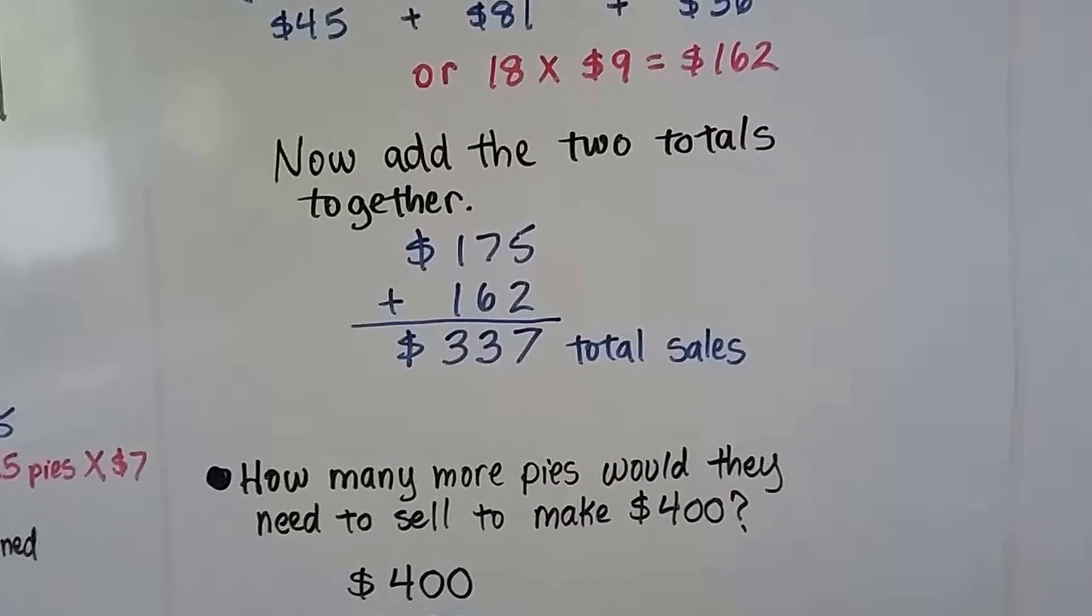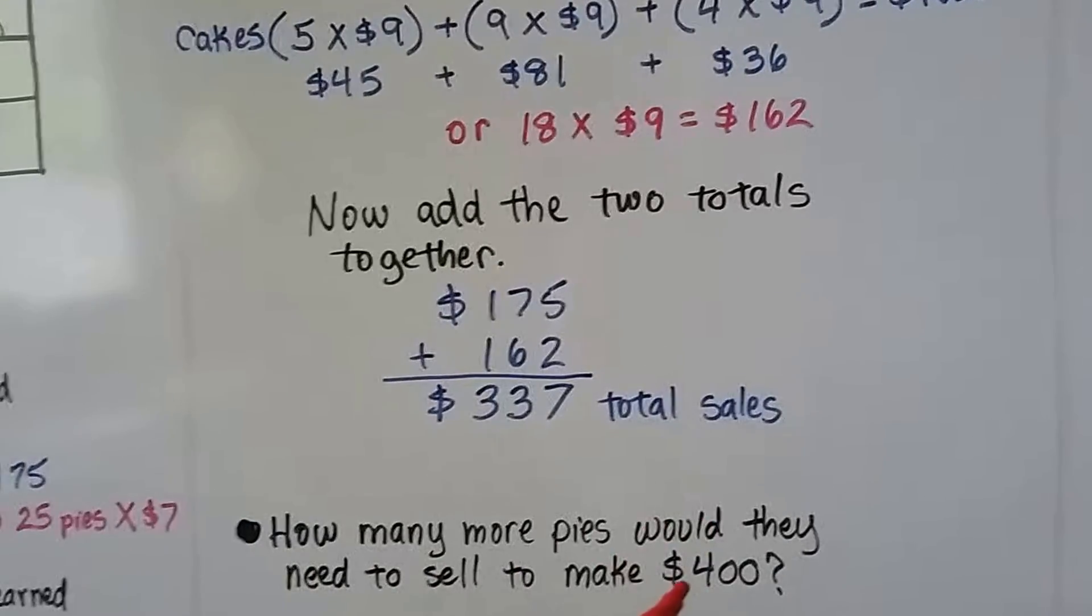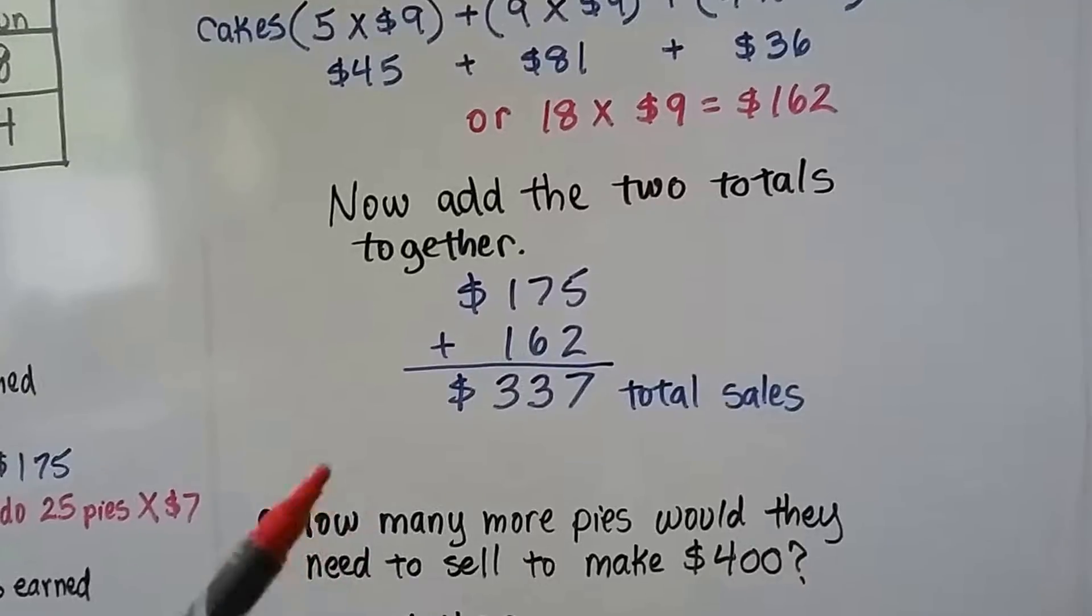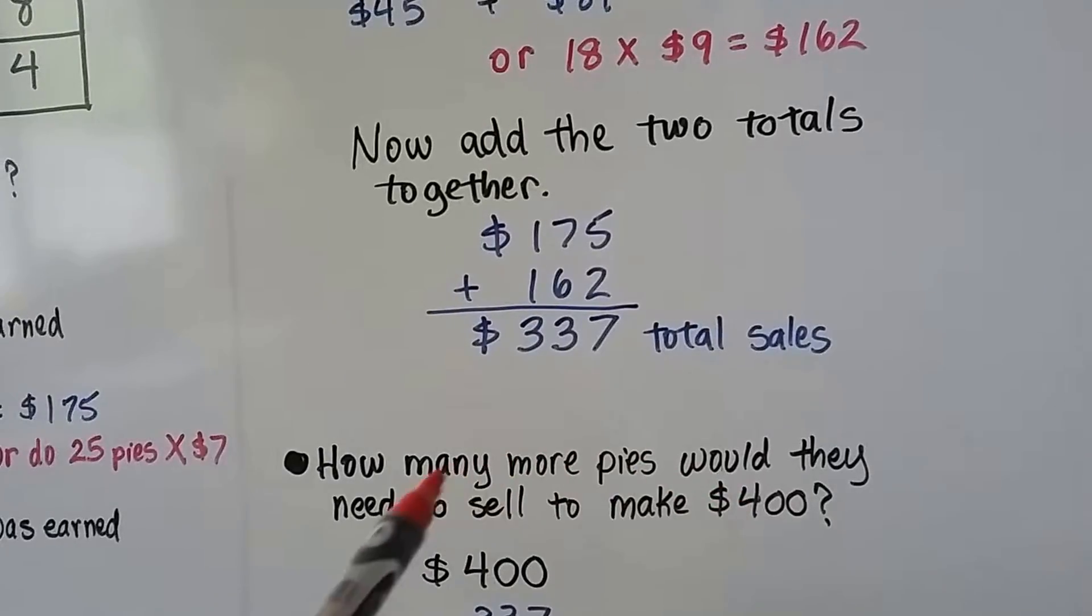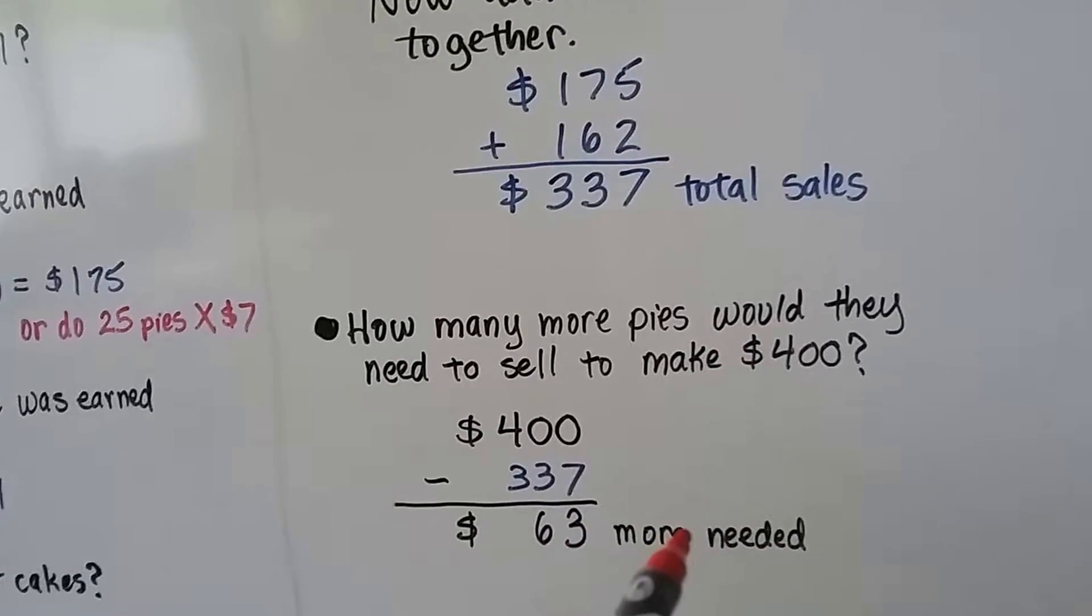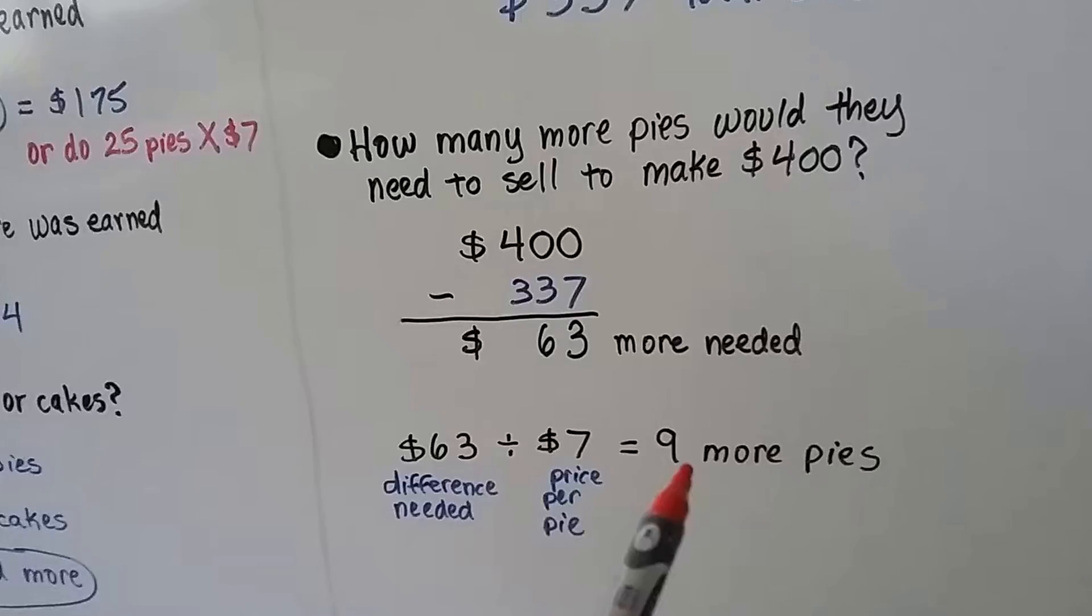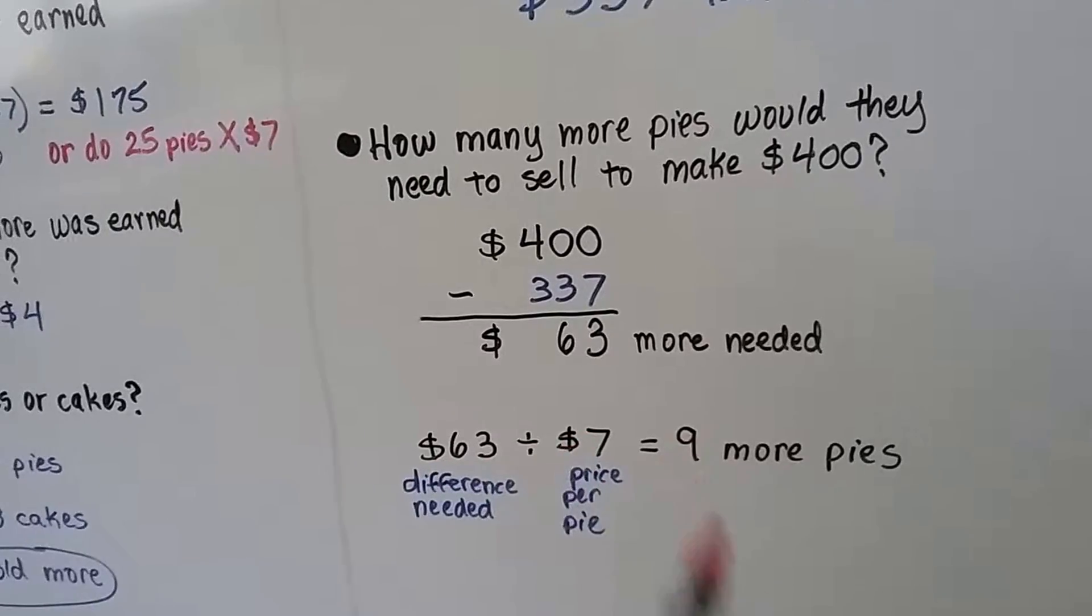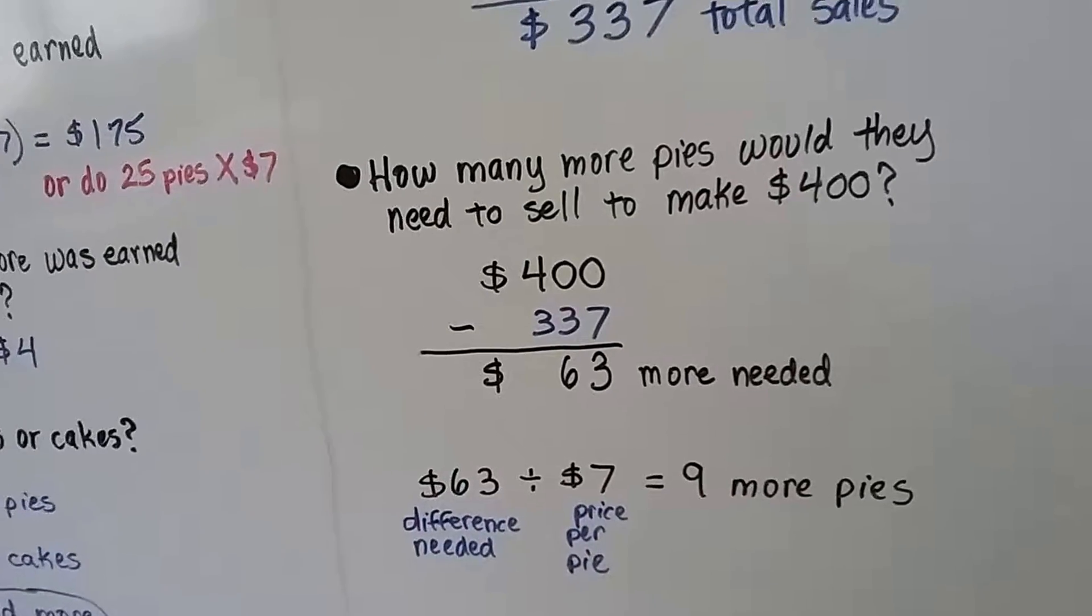How many more pies would they need to sell to make $400? What if the class was going on a trip, and they needed $400 for their trip, and that's why they had the bake sale. But, they only sold $337, and the bake sale was almost over. How many more pies do we need to sell to make our goal? We take the amount, $400, and we compare it to what they did sell, $337, and find the difference. That would be $63 more needed. The pies are $7 a piece. That means they would need nine more pies. We divide that $63 by the price, because that's an amount, a dollar amount. We're comparing apples to apples, the same things, to find nine more pies.